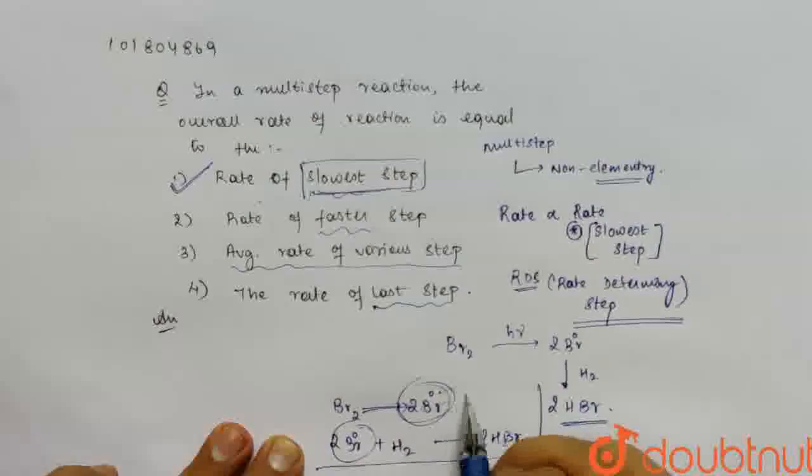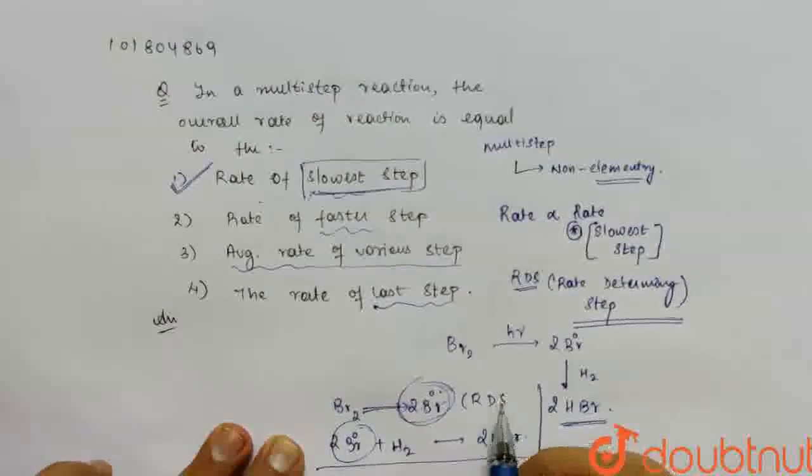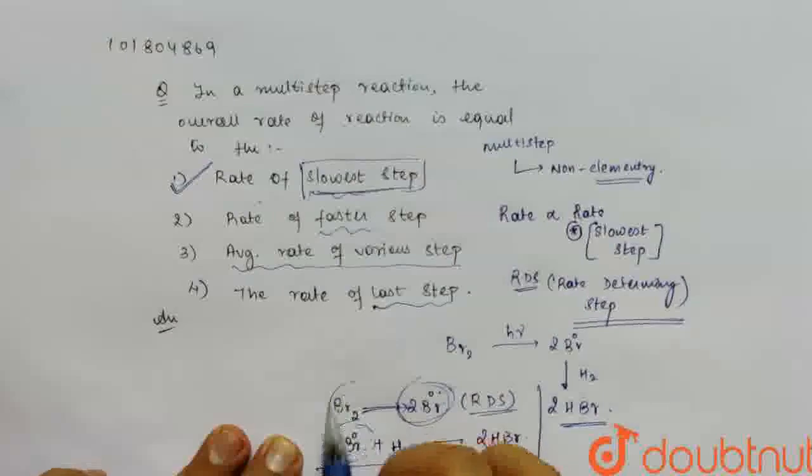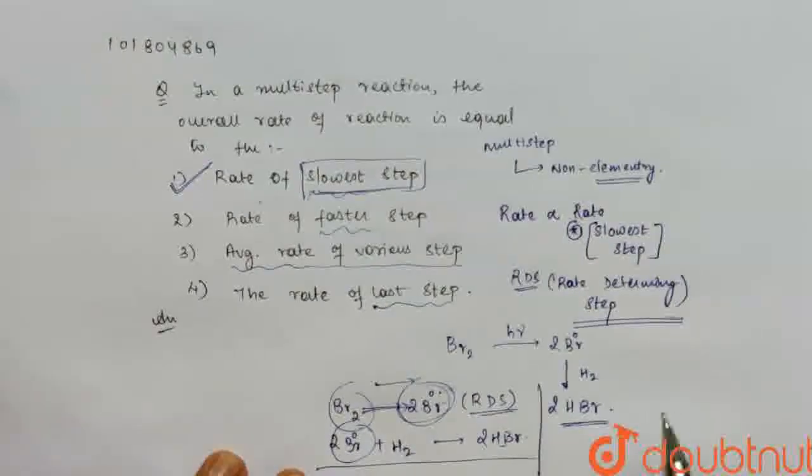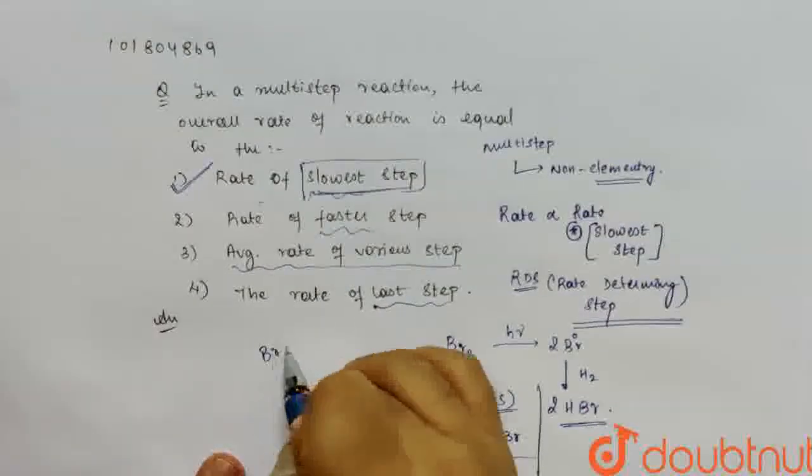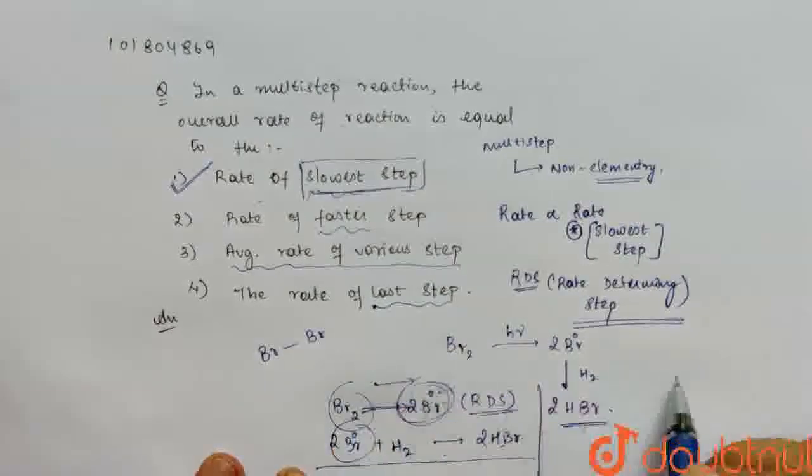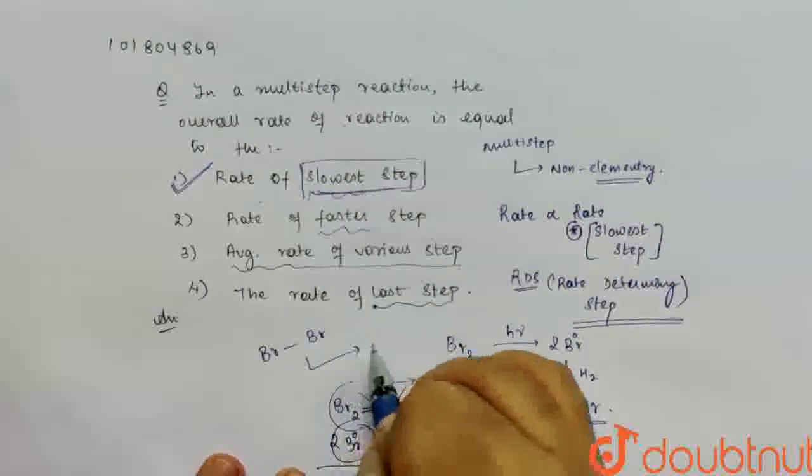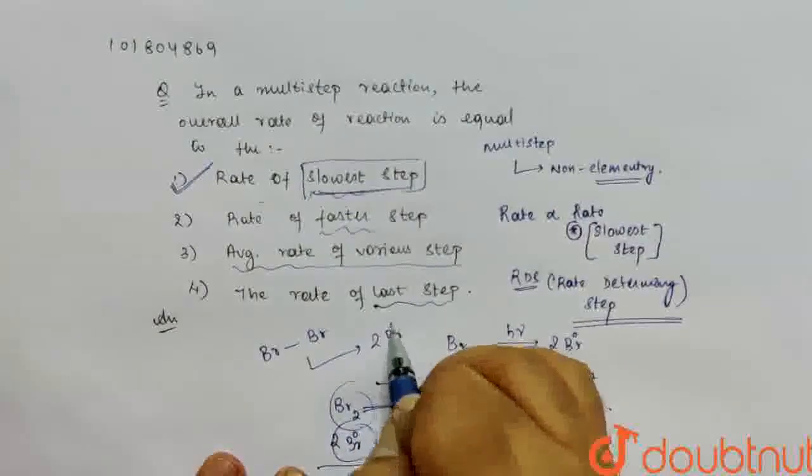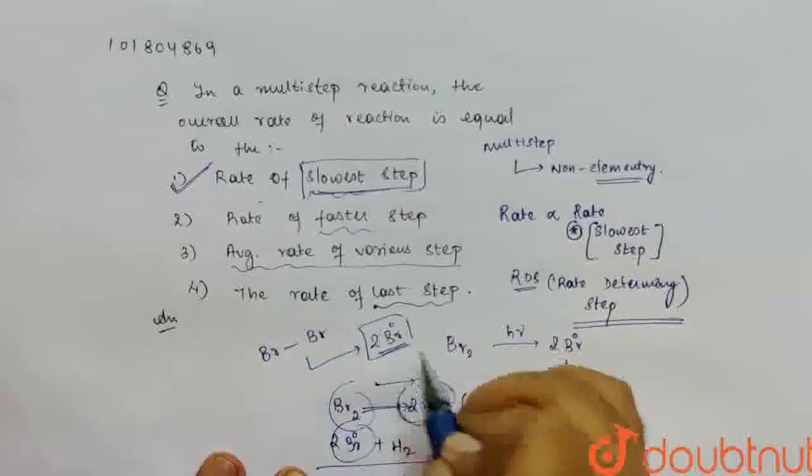And the rate determining step RDS will be the first one where you have to break BR2. Because BR2, this bond in this reaction requires more energy because this bond breaks to form two unstable radicals which is BR2.